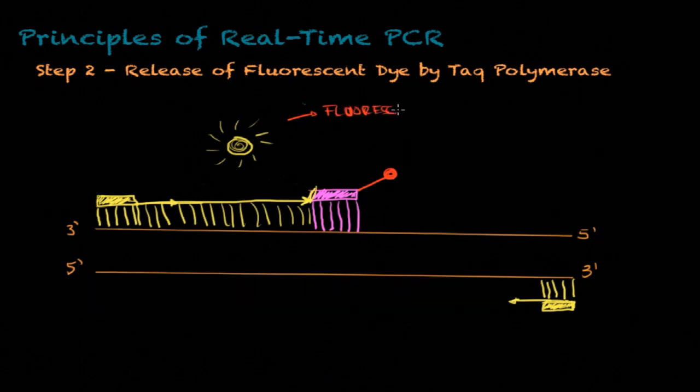Then fluorescence can be detected and measured in a real-time PCR machine, and that is what real-time PCR allows you to do.